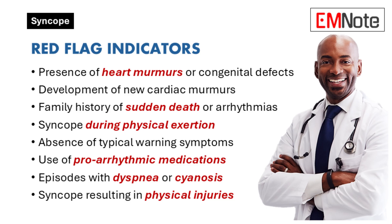The following clinical features should immediately raise concern: a history of heart murmurs or congenital heart disease; newly detected murmurs on physical examination; a family history of arrhythmias or sudden cardiac death; syncope during exertion or without prodromal symptoms; medications known to provoke arrhythmias; episodes with accompanying hyperpnea or cyanosis; and physical trauma resulting from syncope.